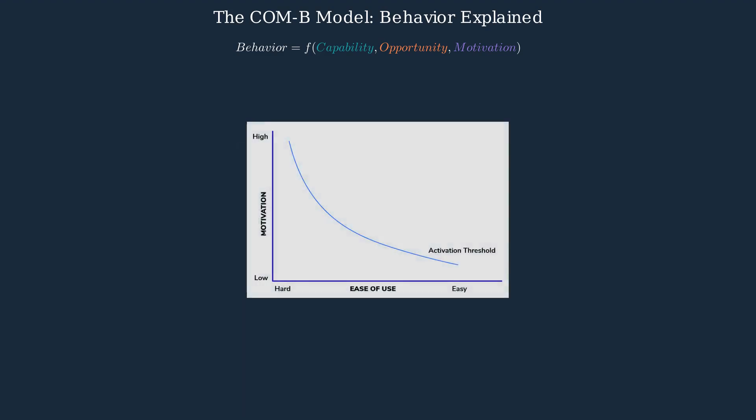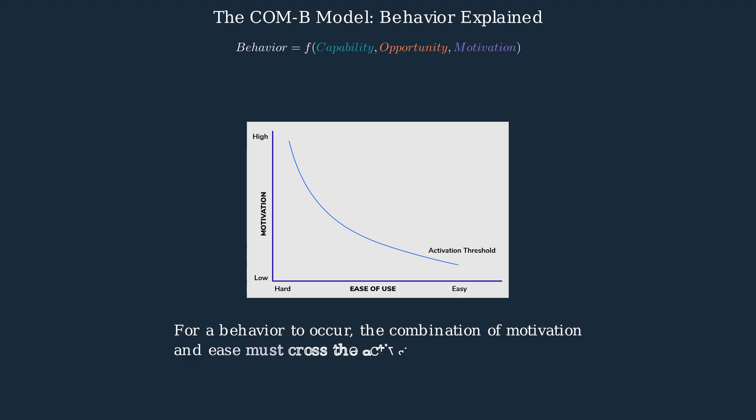An important concept in behavior change is the activation threshold. This graph shows the relationship between motivation and ease of use. For a behavior to occur, the combination of motivation and ease of use must cross the activation threshold. When a behavior is very easy to do, even low motivation can be sufficient.